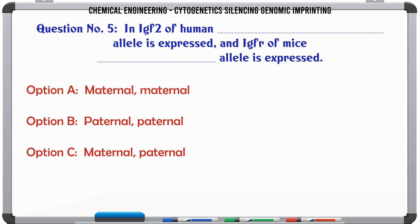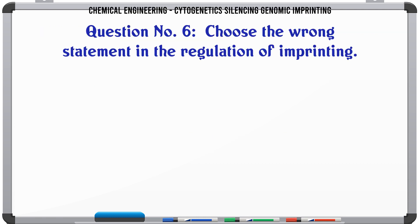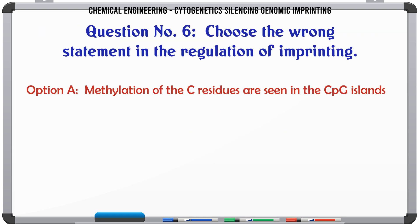In IGF-2 of humans, which allele is expressed, and IGF-2 of mice, which allele is expressed? A. Maternal-maternal, B. Paternal-paternal, C. Maternal-paternal, D. Paternal-maternal. The correct answer is D: Paternal-maternal.